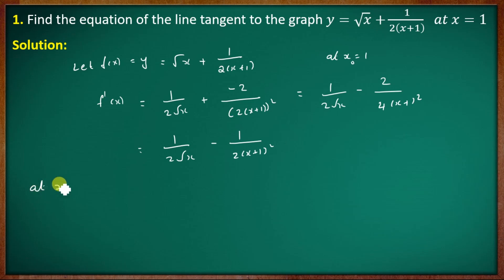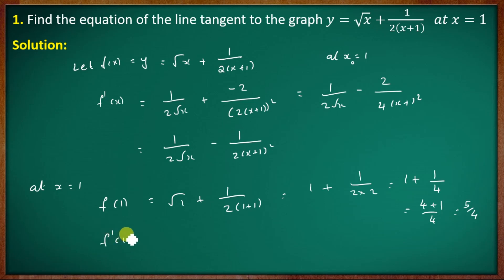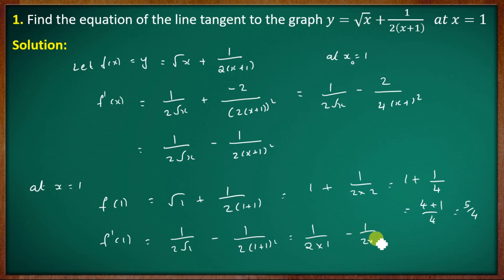At x = 1: f(1) = √1 + (1/2)(1+1) = 1 + 1/4 = 5/4. Then f'(1) = 1/(2·√1) − 1/(2·(1+1)²) = 1/2 − 1/8.